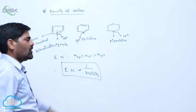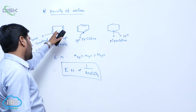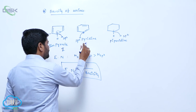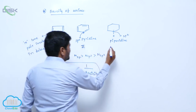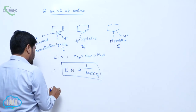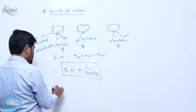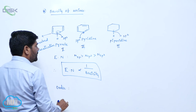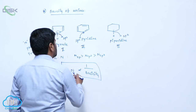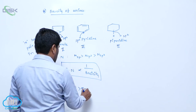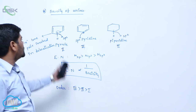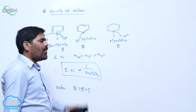One more factor is predominant here: the lone pair donating capacity decreases for pyrrole. When we compare the basicity of these three, the order is: third greater than second greater than first. This is the order of basicity of substituted or cyclic amines.